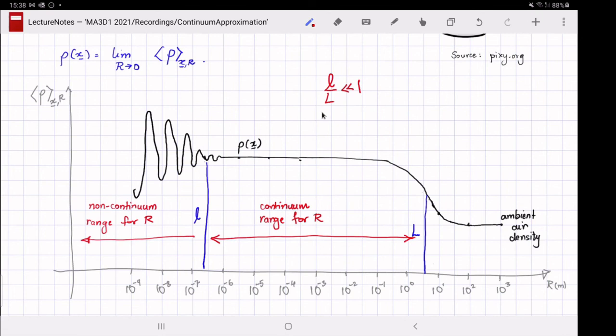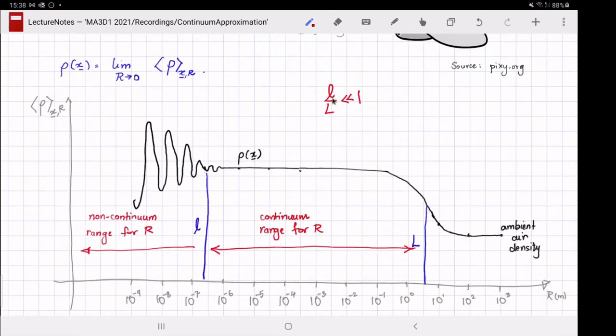The condition mean free path over length scale, l over L much less than one, implies that there exists a range of r, labeled here as the continuum range, in which the average density could be taken to be independent of r and the limit of r going to 0 to be attained. Therefore, truncating the limit r goes to 0 to this continuum range will be termed as taking the continuum limit. In this way, a continuous density field emerges from the continuum approximation. Other continuous fields emerge similarly.